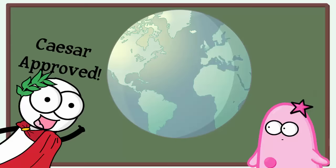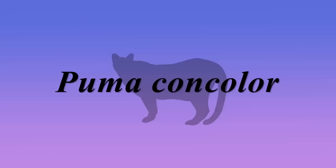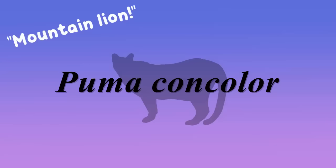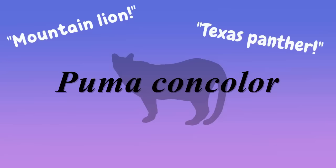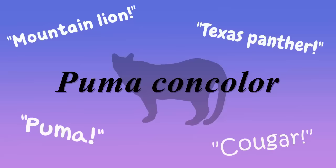This unification in the naming system is important because common names vary by language and location and are often far less reliable. For example, one scientific name can have many common names such as mountain lion, Texas panther, puma, or cougar — although those were fun to say.